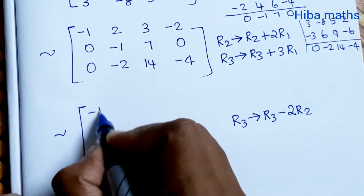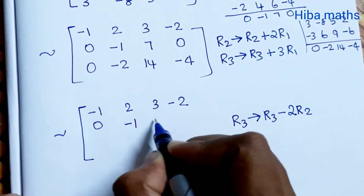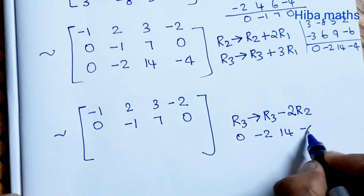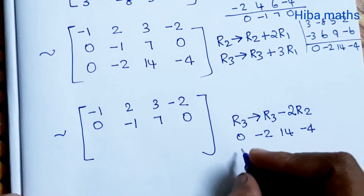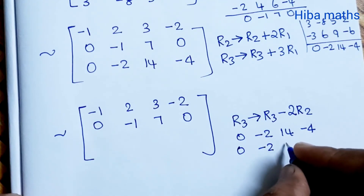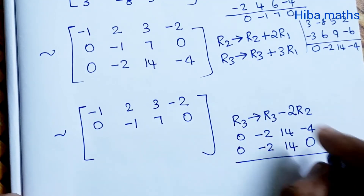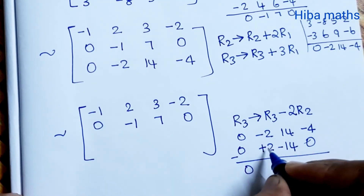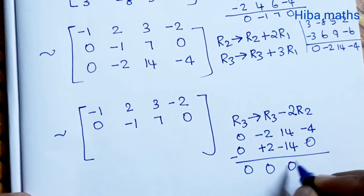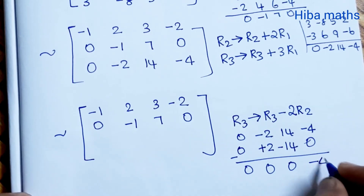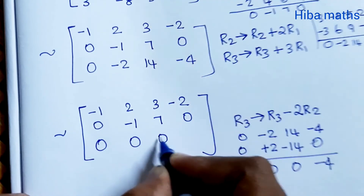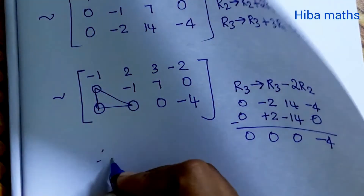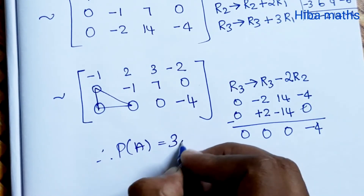First two rows: minus 1, 2, 3, minus 2 and 0, minus 1, 7, 0. R3 is now [0, minus 2, 14, minus 4]. 2 times R2: 0, minus 2, 14, 0. Subtracting: minus is plus, minus is plus, plus is minus. Result: 0, minus 2 plus 2 is 0; 14 minus 14 is 0; minus 4 plus 0 is minus 4. So the answer is [0, 0, 0, minus 4]. Row echelon form — non-zero rows are 1, 2, 3. Therefore, rank of matrix A is equal to 3.